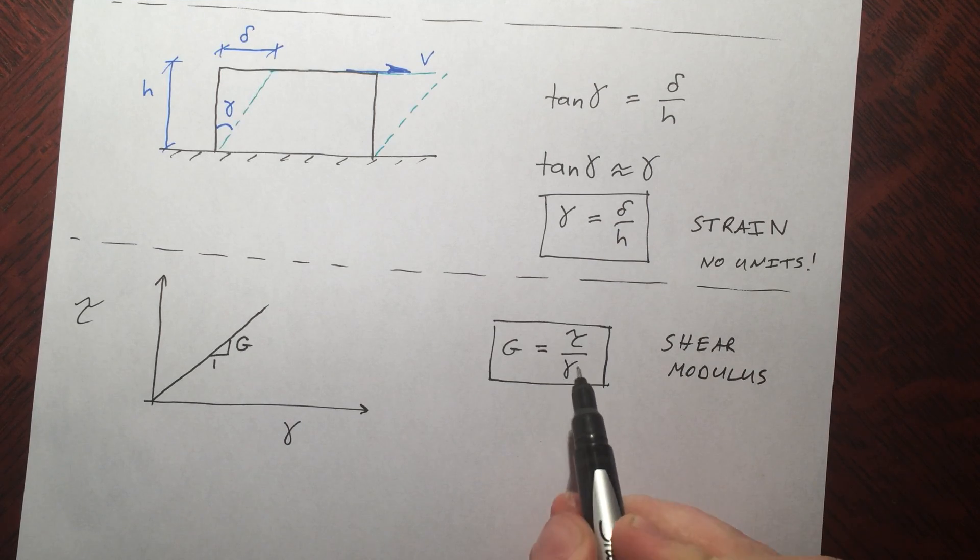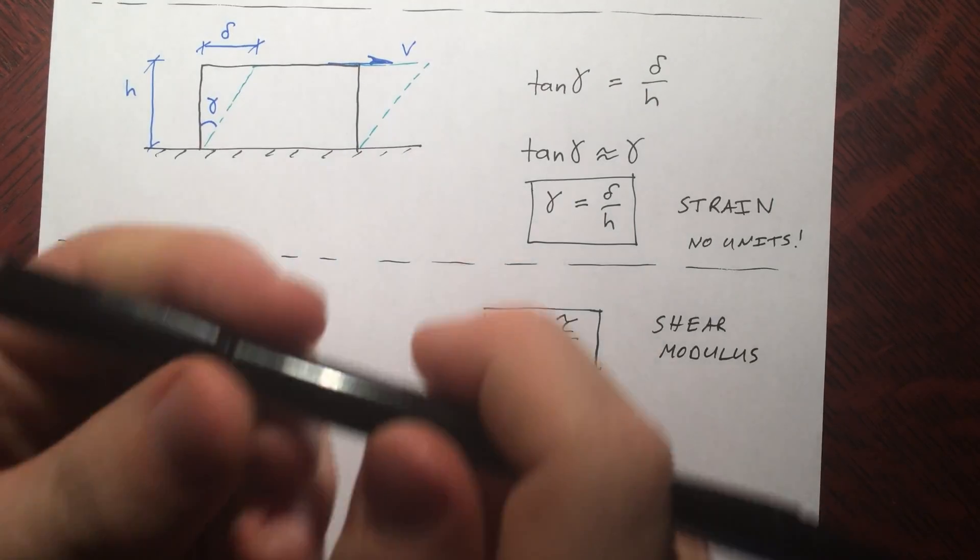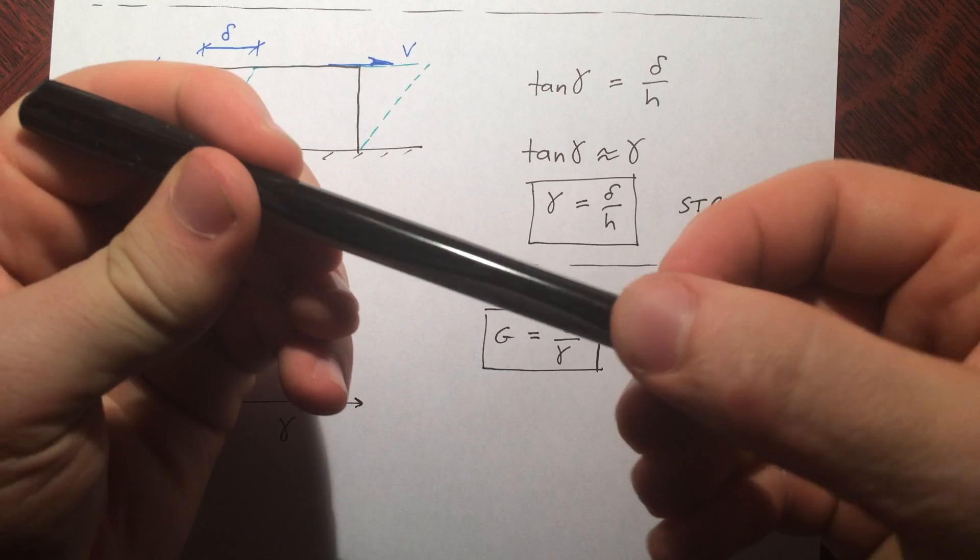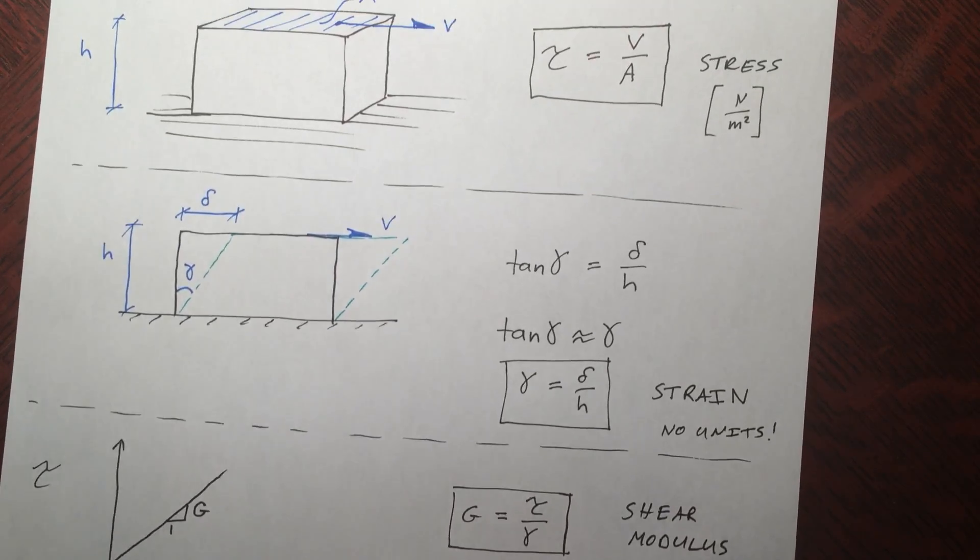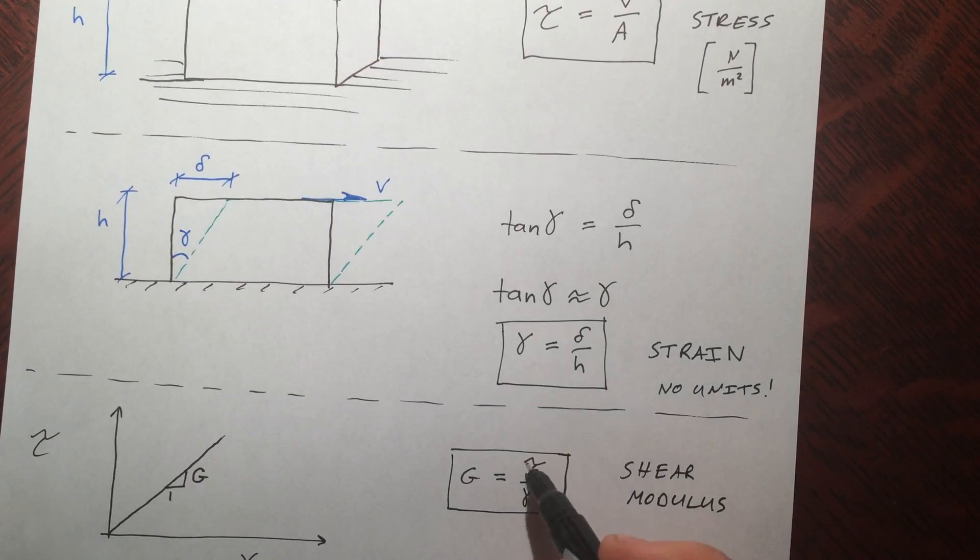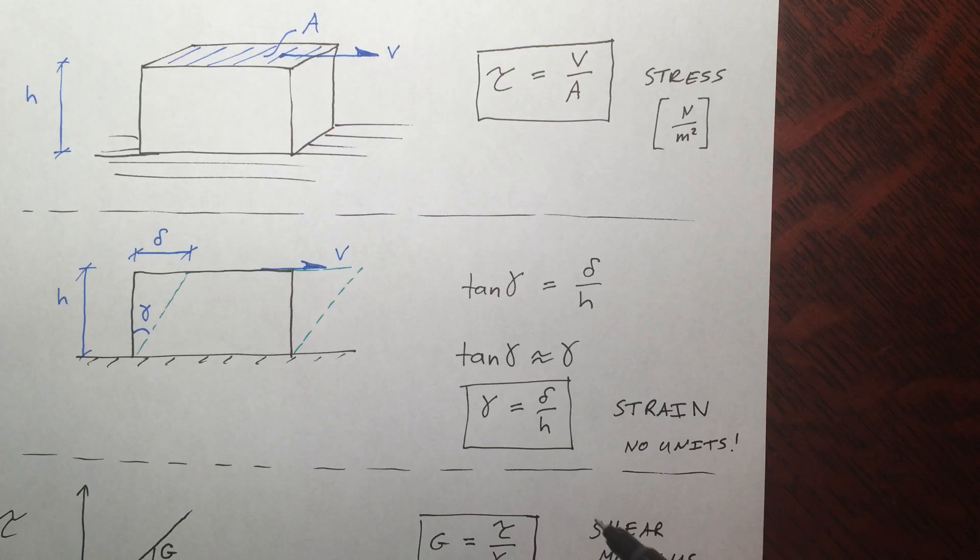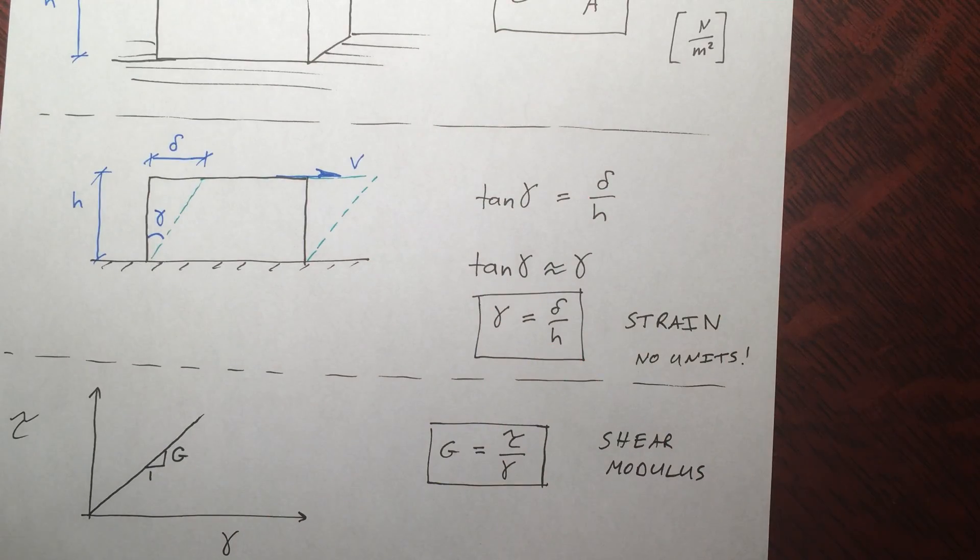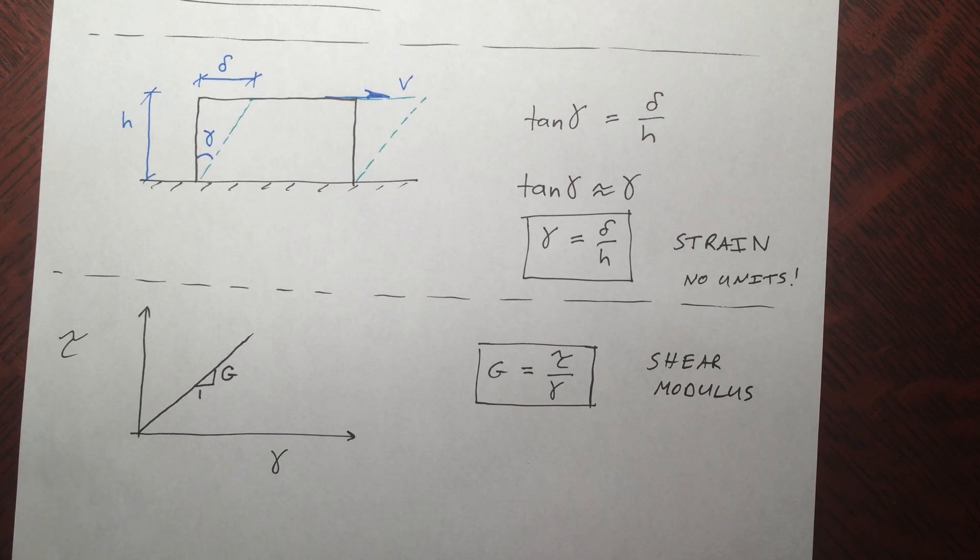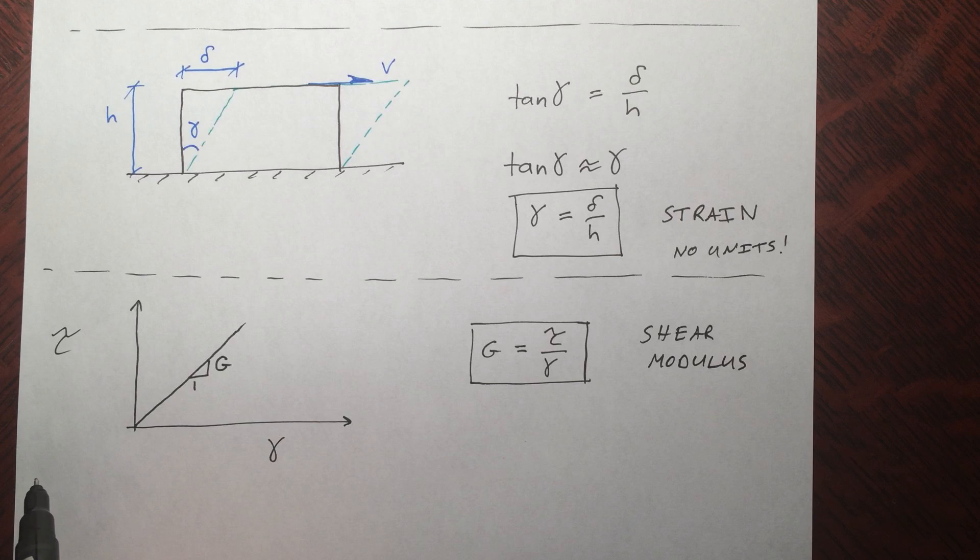Now this is important later on when we go into something called torsional bars, when you take a bar and you twist it. That has to do with the shear modulus. If you wanted, you could plug in tau and gamma like we did before, but I've never seen that, so I'm not going to spend the time doing that. Instead, let's just do a quick example here.